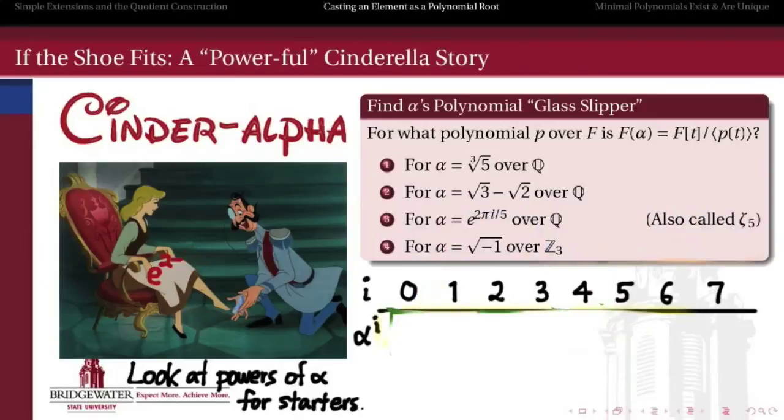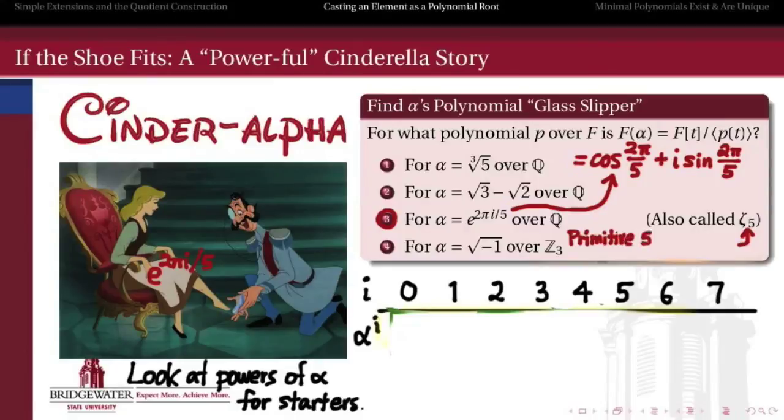For our next example, let's talk about the number e to the 2 pi i over 5. This is kind of strange, i here is the complex unit. And according to Euler's formula, e to the 2 pi i over 5 is the cosine of 2 pi over 5 plus i times the sine of 2 pi over 5, whatever those numbers happen to be. We call this number the primitive fifth root of unity, and that's for reasons that we'll see in a minute. It's called a fifth root of unity. Unity is the number 1. Because when we raise this number alpha to the fifth power, we end up getting 1. Why? Well, let's take a look.